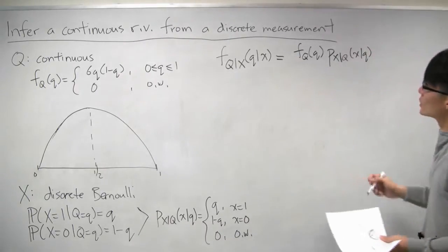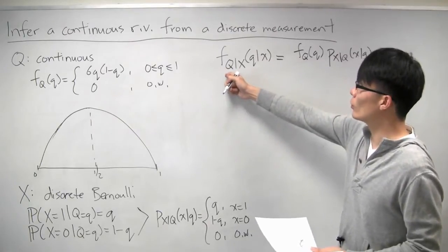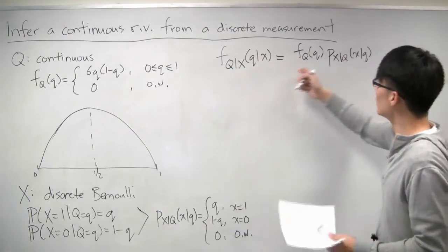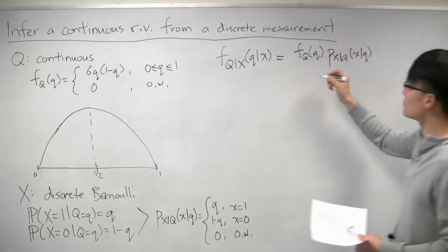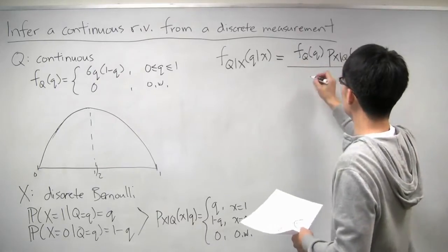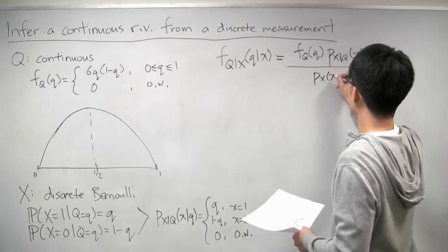Because we have a continuous random variable that we want to infer from a discrete measurement, we use this variation of Bayes' rule, where we have a PDF here and a conditional PMF here. And the denominator is the PMF of x.